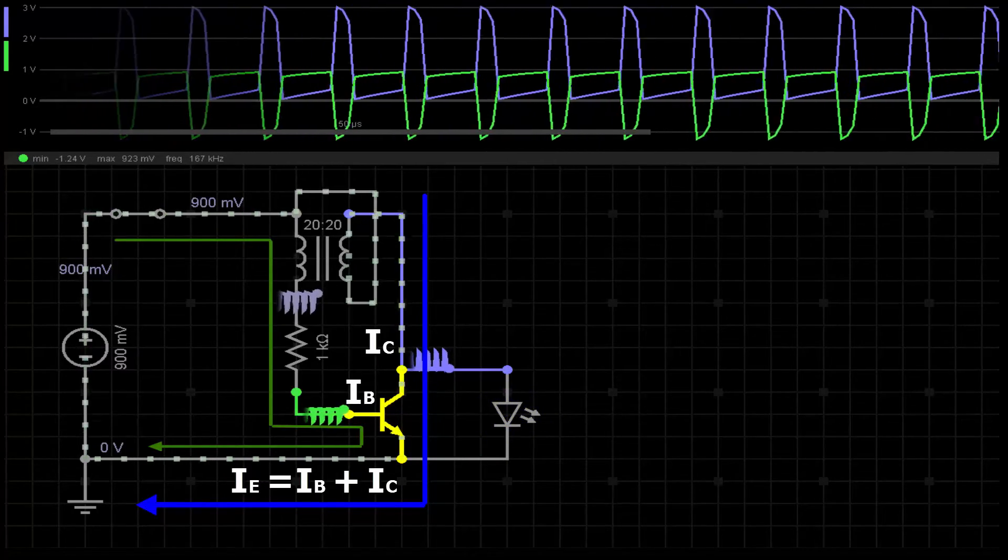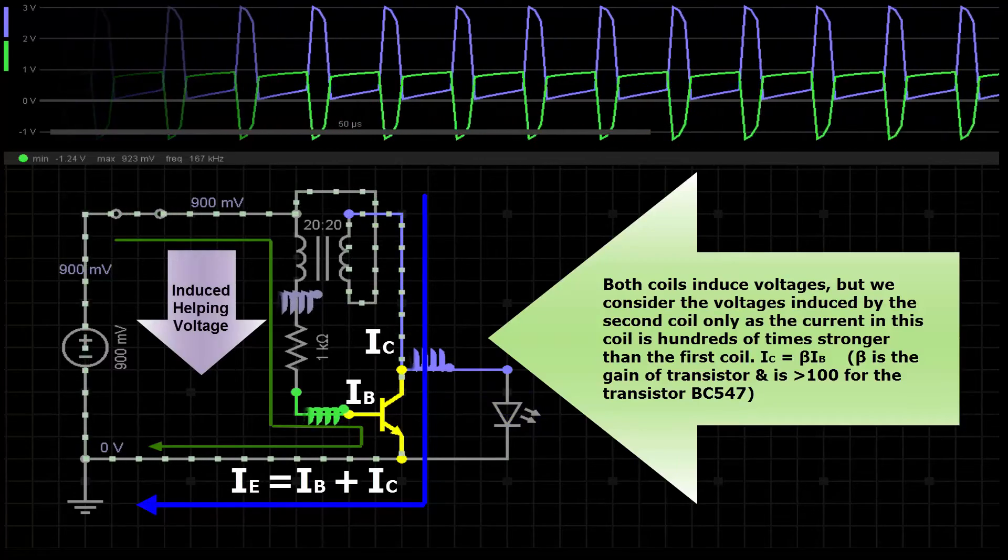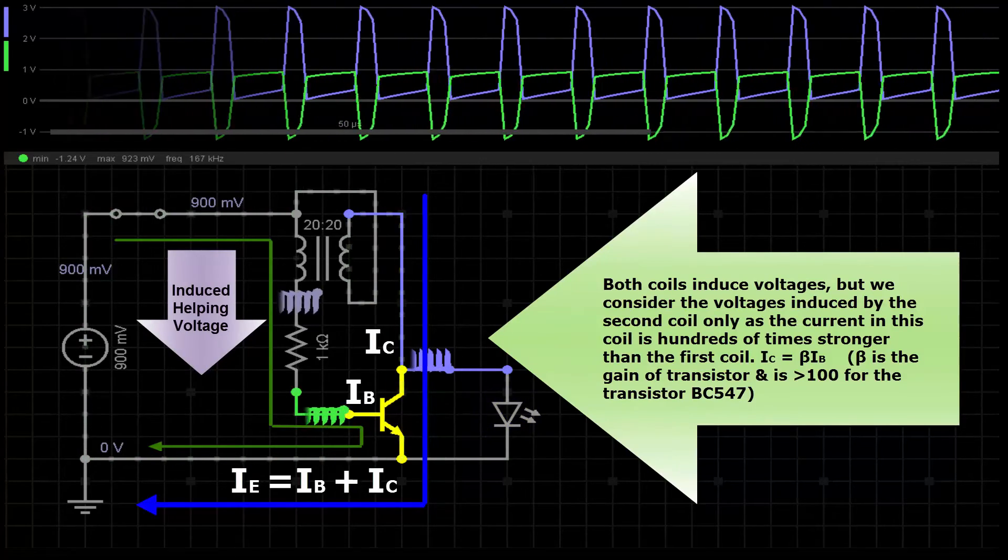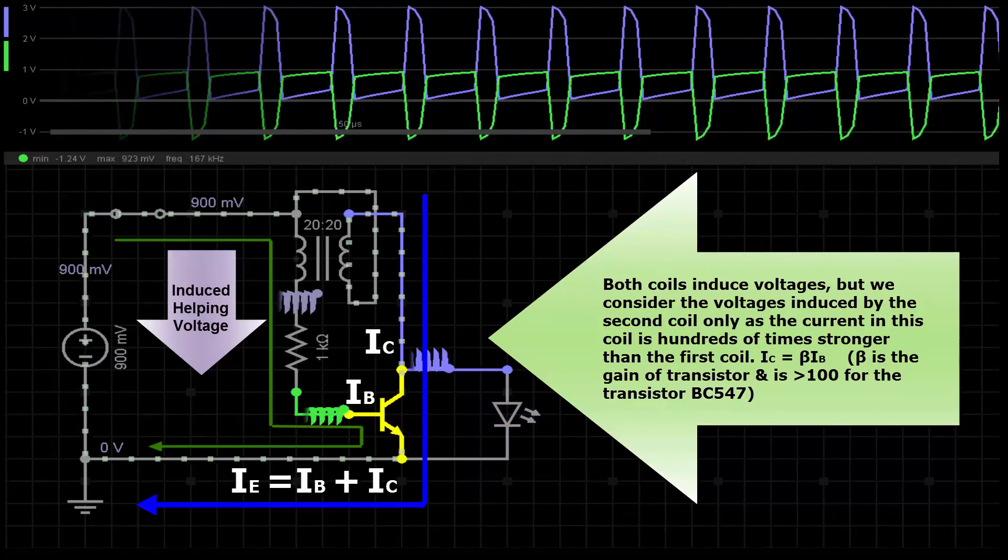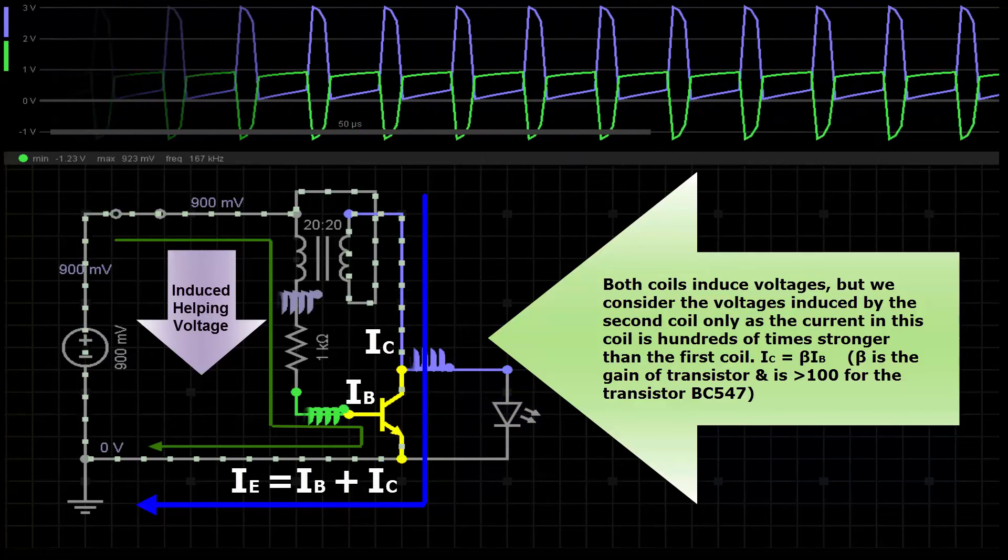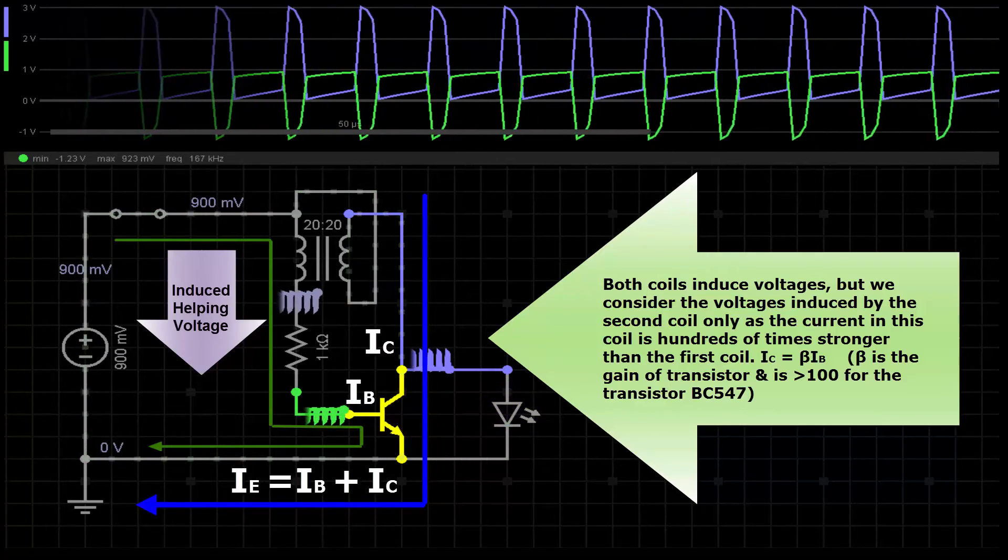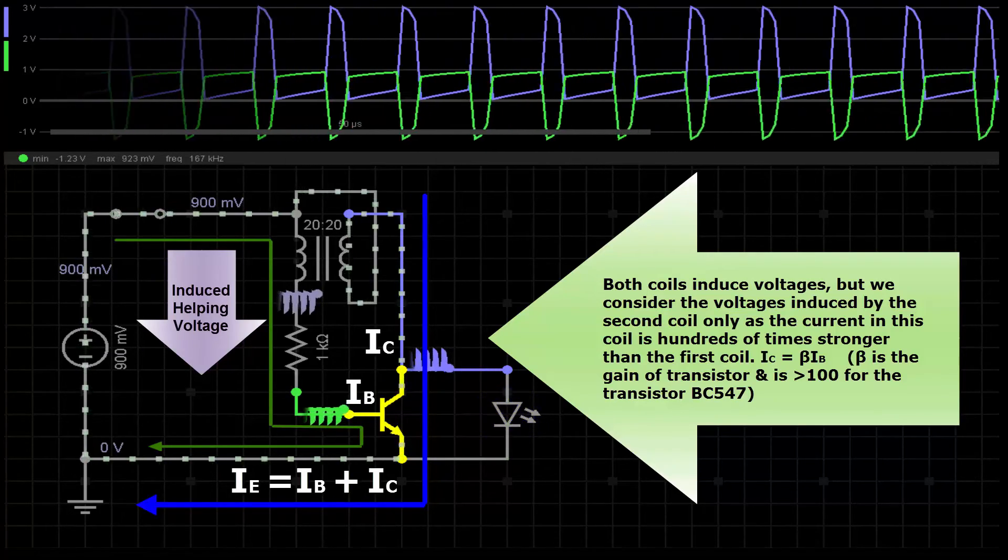The increasing current in the second coil induces a voltage that is in the same direction as the battery voltage in the first coil and this causes the transistor to turn on completely.